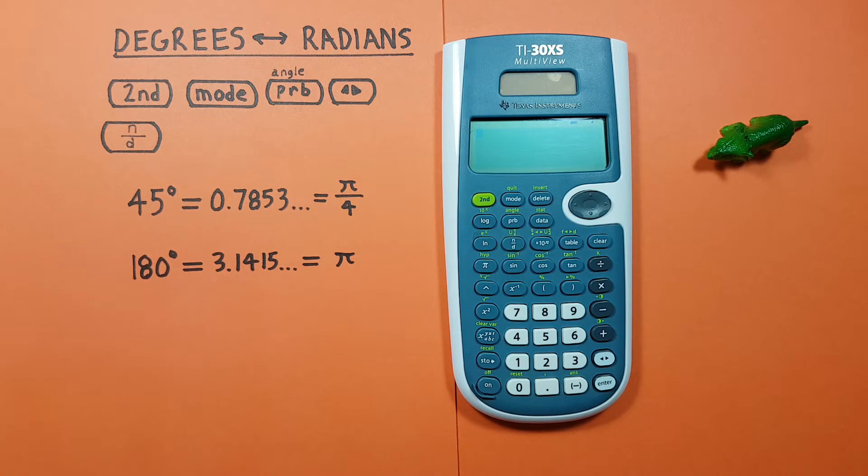We can easily convert between degrees and radians on this calculator. For example, if we want to convert 45 degrees into radians.